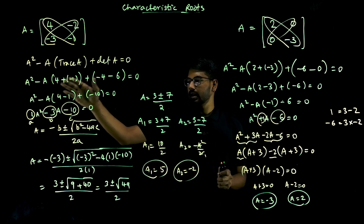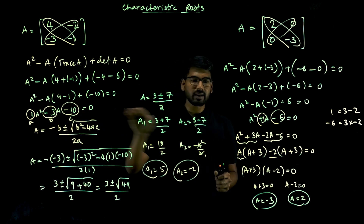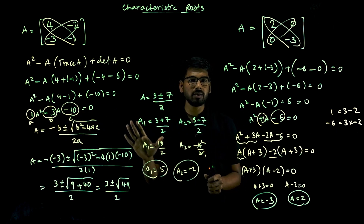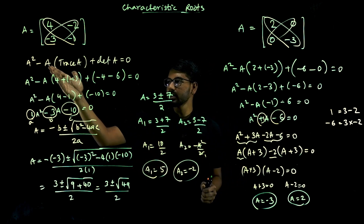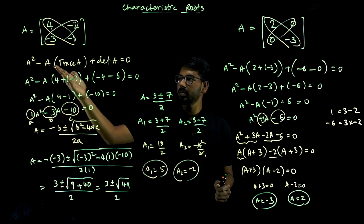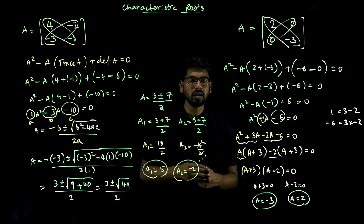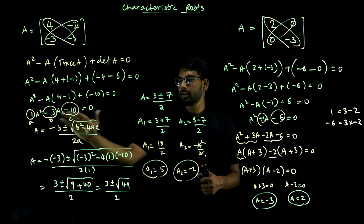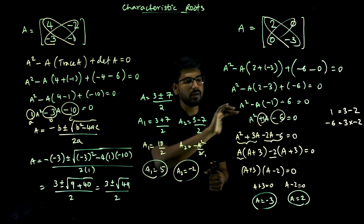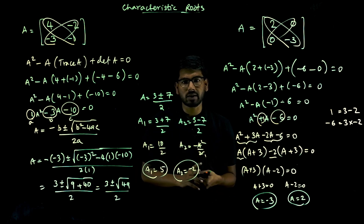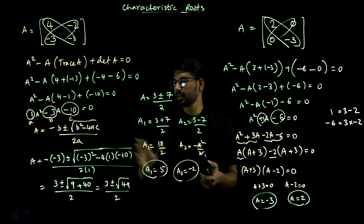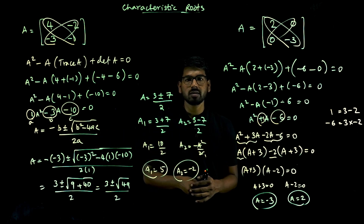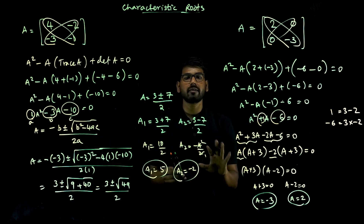Finding the characteristic equation is simple — just remember lambda squared minus lambda times trace of A plus determinant of A. After that, find the values of lambda by solving the characteristic equation using either the formula or factorization.